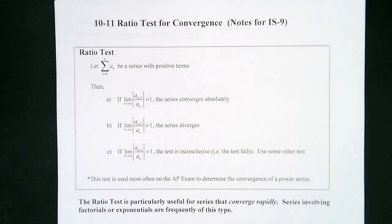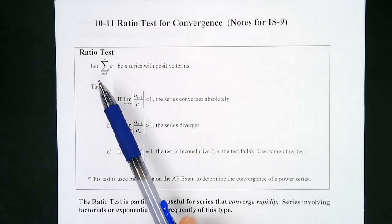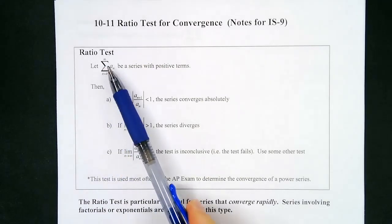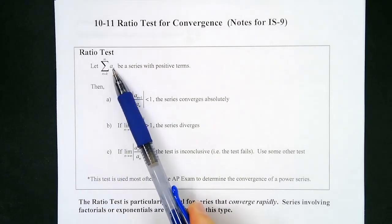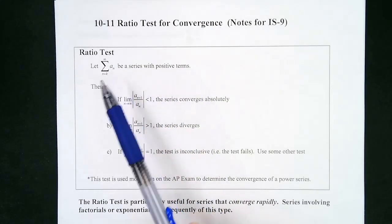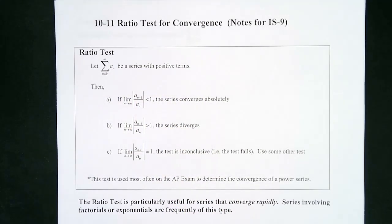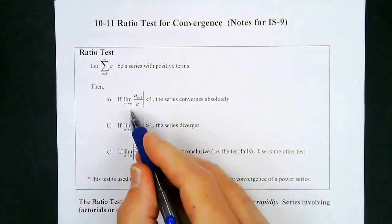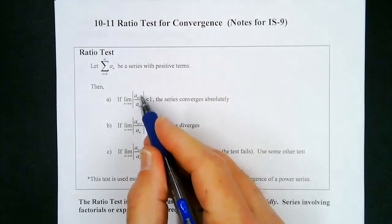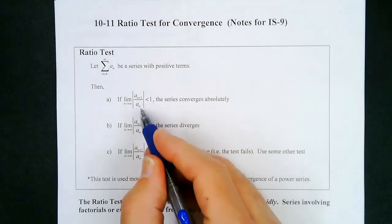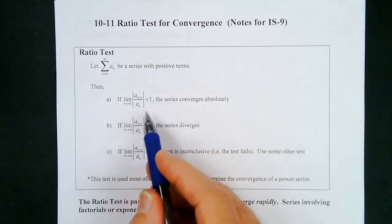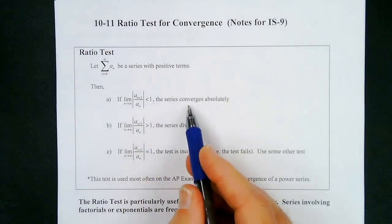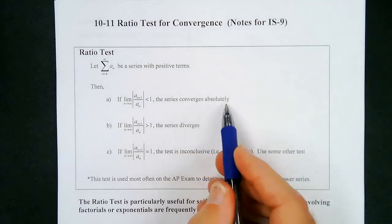Today we're going to learn about the ratio test for convergence. What the ratio test says is: if we let sigma from n equals k to infinity of a_sub_n be a series with positive terms — we force this by taking the absolute value — then if the limit as n approaches infinity of the next term over the previous term is less than one, the series converges absolutely.